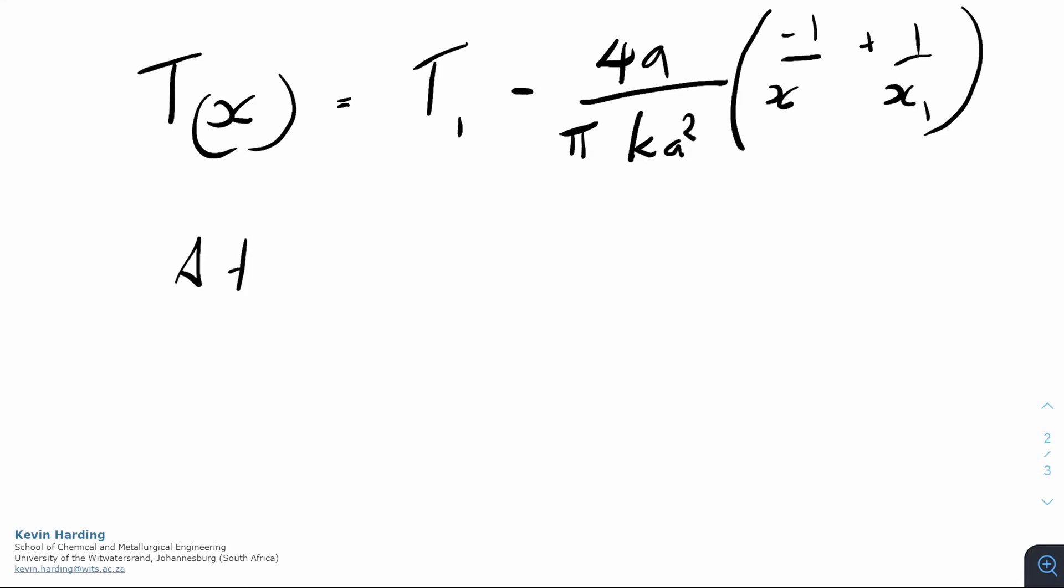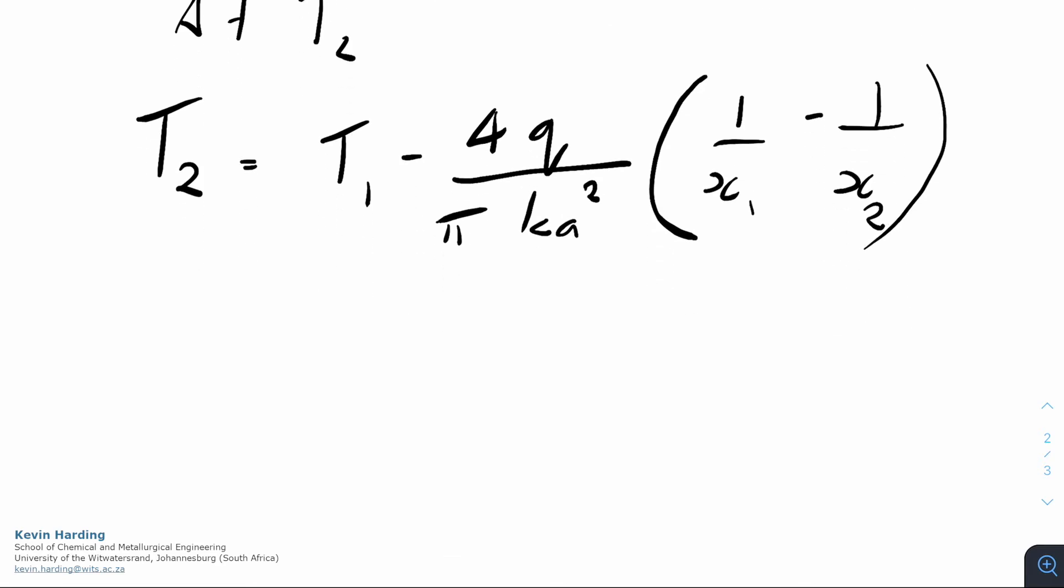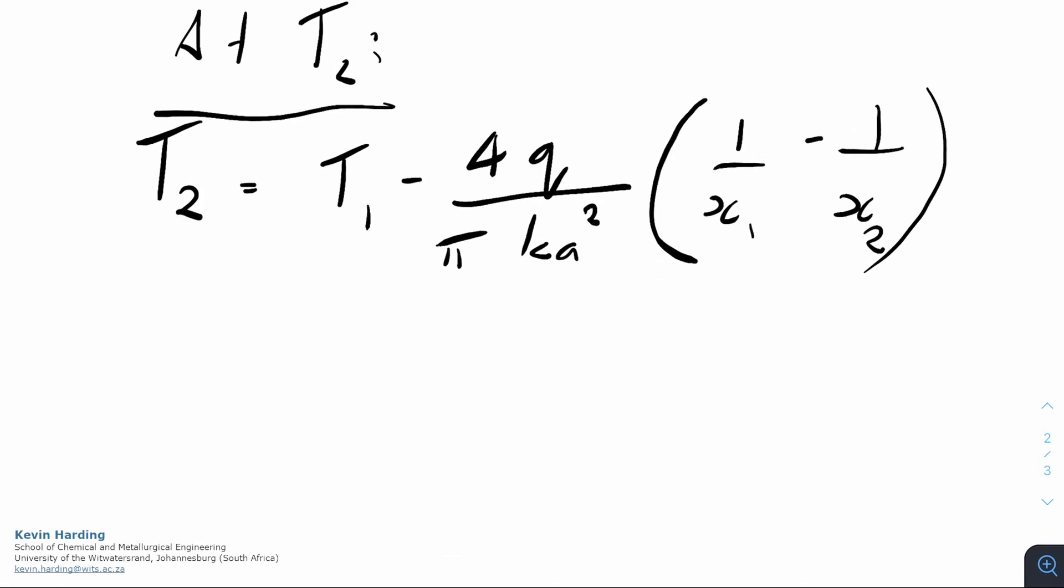Looking at temperature t2, we can substitute t2 into this equation as t2 being equal to t1 minus 4q divided by pi k a squared, and just flipping the x's around we'll have 1 on x1 minus 1 on x2. So that is now an equation in terms of t2.